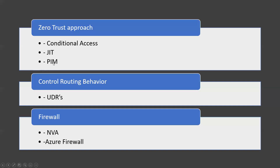Grant temporary permissions to perform privileged tasks, which prevents malicious or unauthorized users from gaining access after permissions have expired — access is granted only when the user needs it. Use just-in-time access in Azure AD Privileged Identity Management, or a third-party solution, to grant permissions to perform privileged tasks.